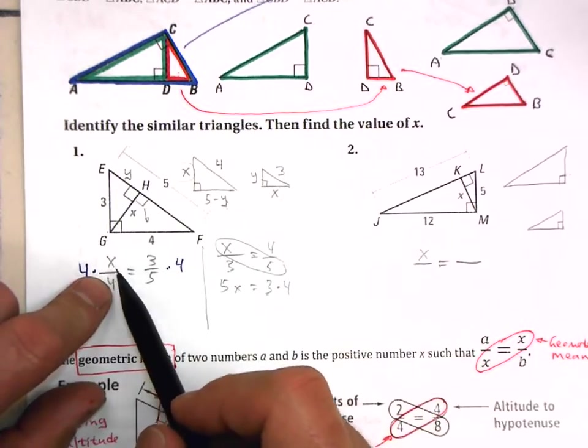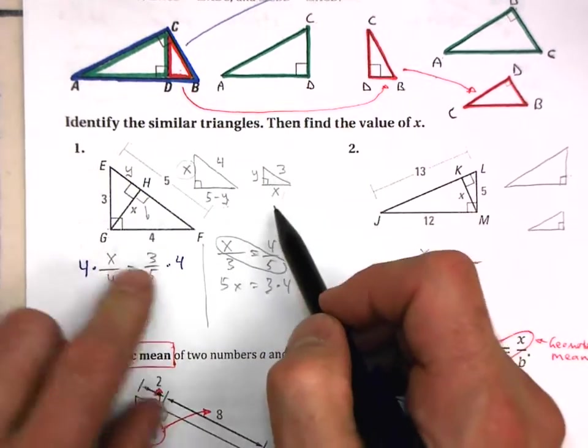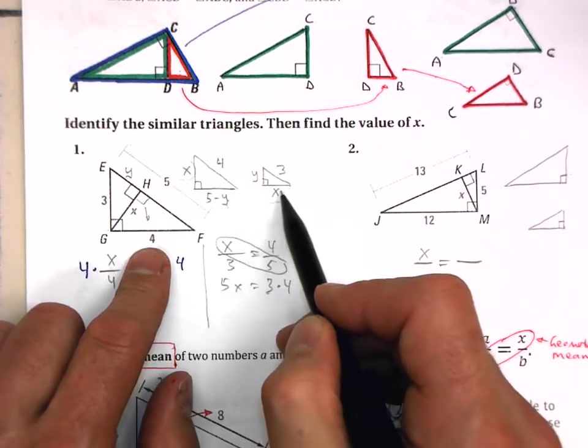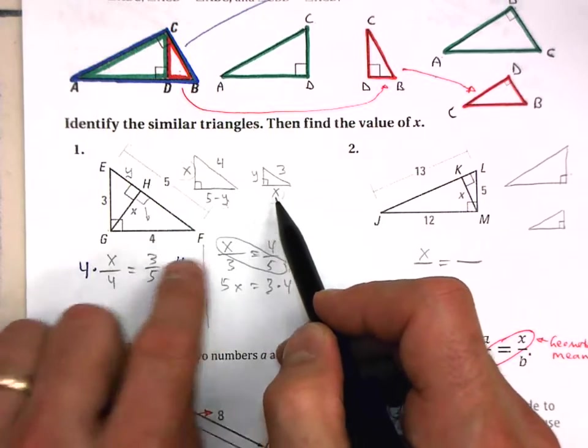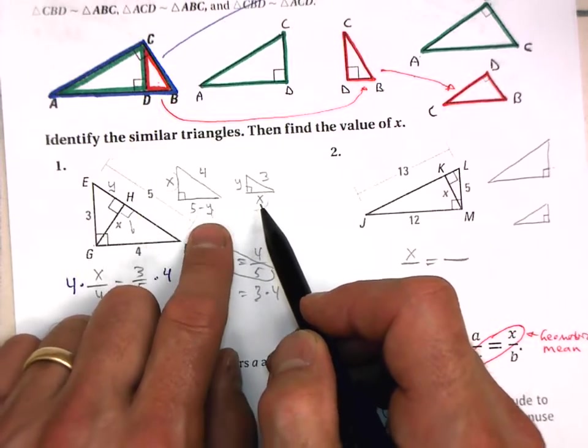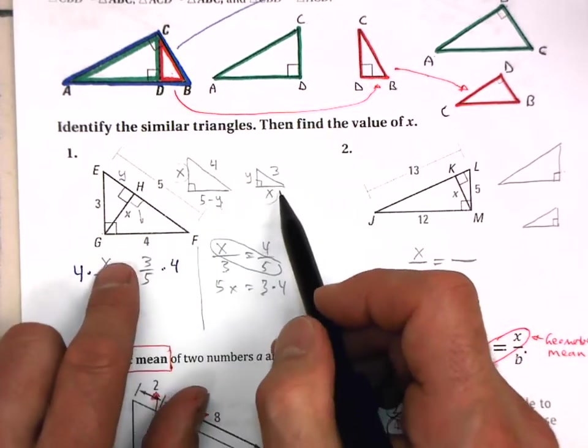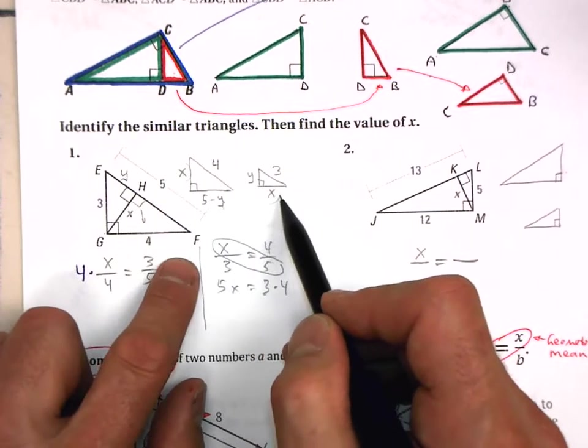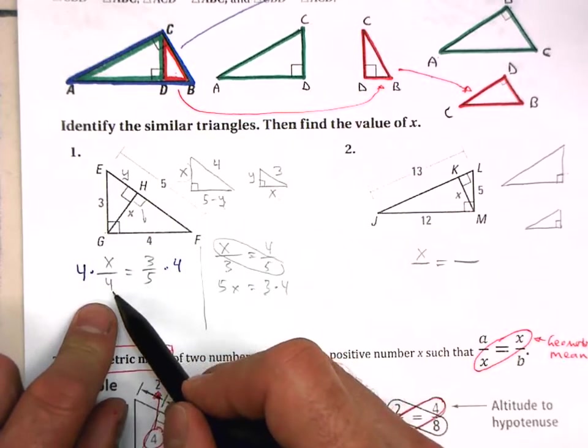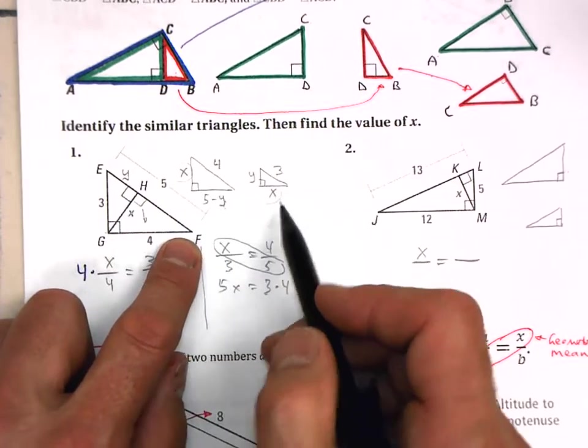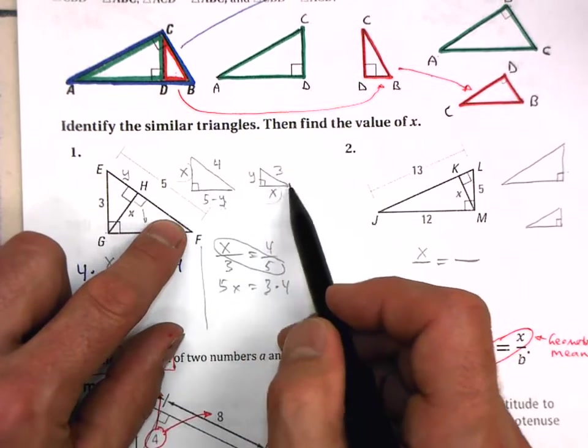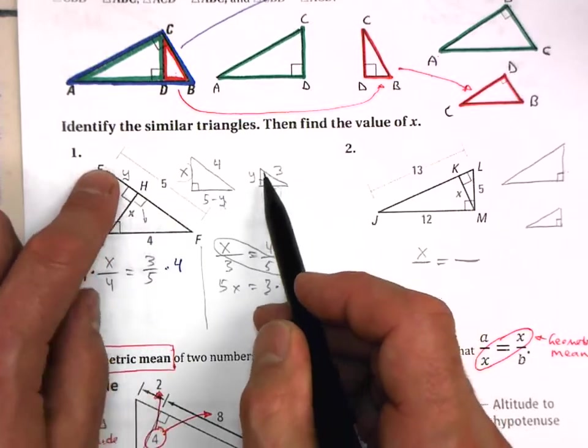The one I did over here, oh, I got it from here. So instead of using this X, what I did before was to use this X over here. So I could do X over 5 minus Y, but that's another variable. I don't want to use that variable. I only want one variable. So these two sides correspond to one another. So X over 4. And then do I have another pair of sides that correspond to each other? And I do, that are only numbers. So 3 over 5.